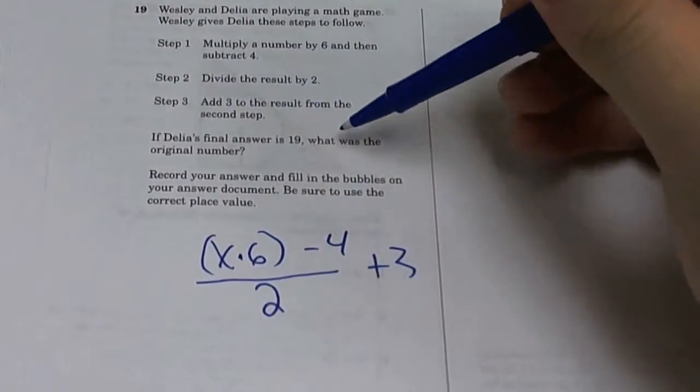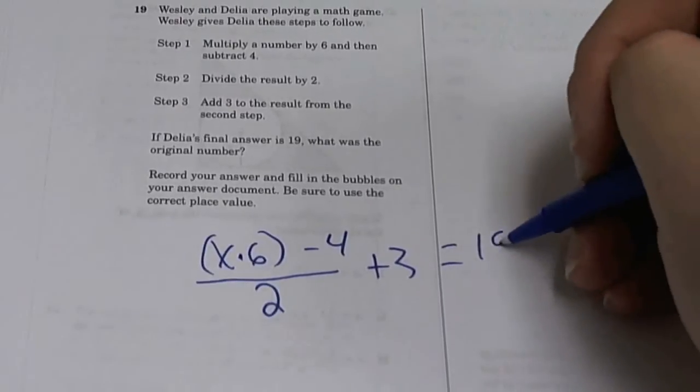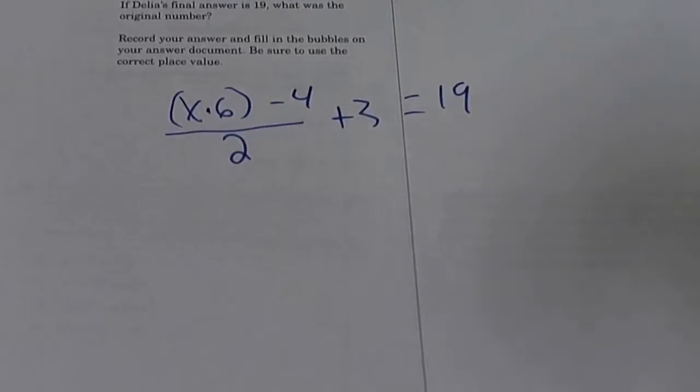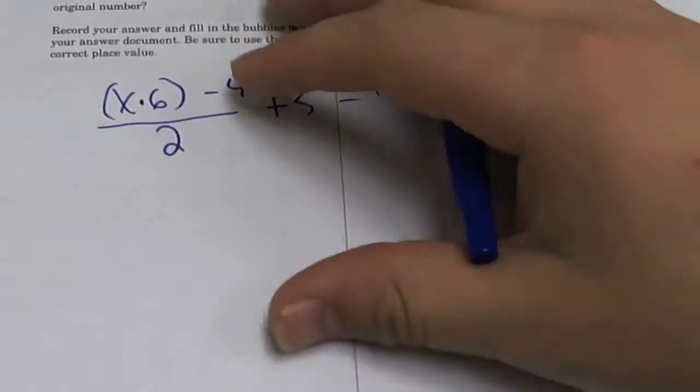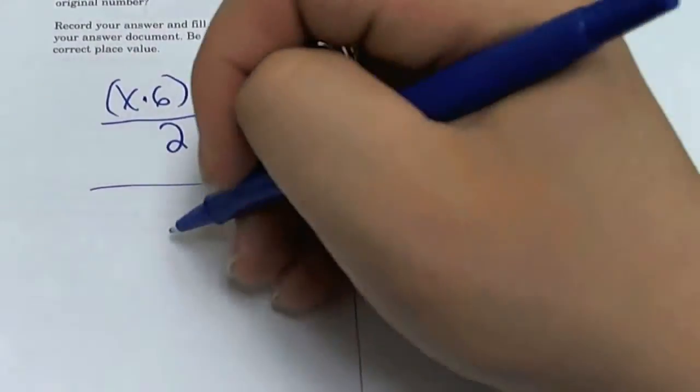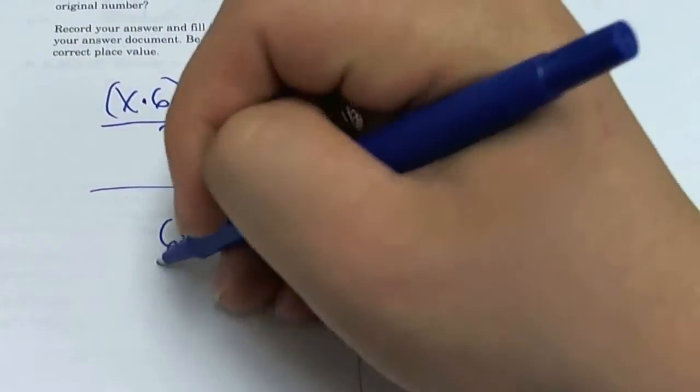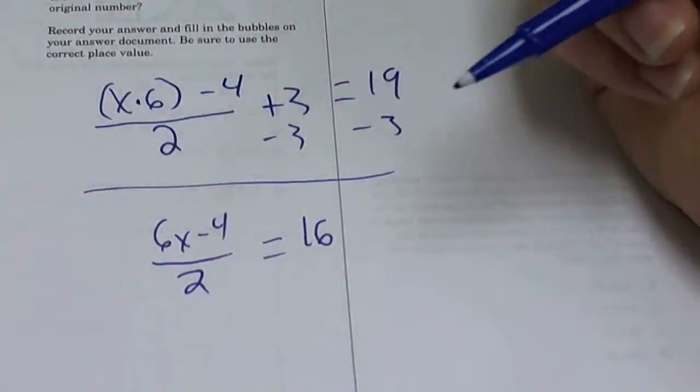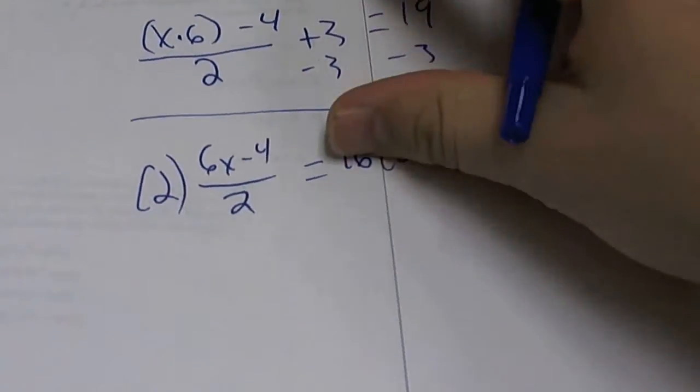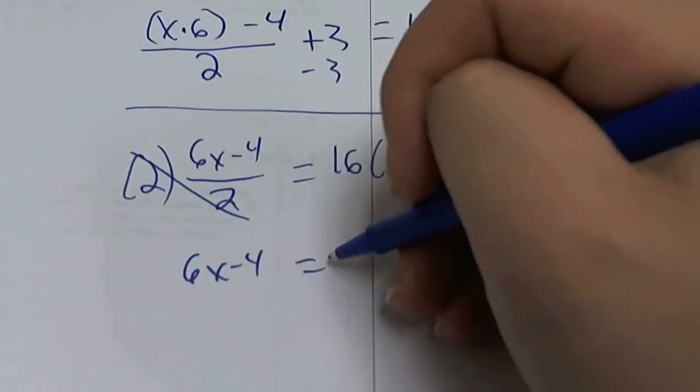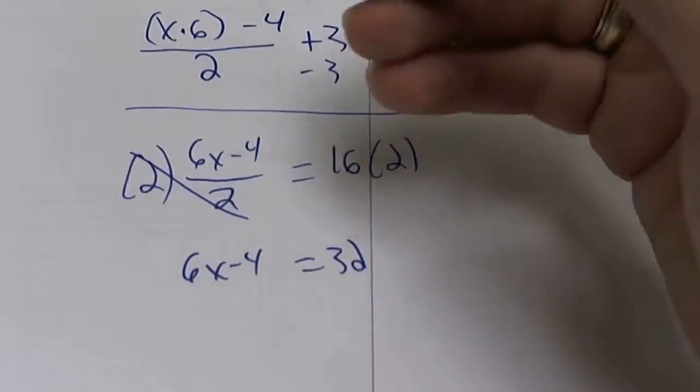If Daly's final answer is 19, what is the original number? So all this has to equal 19. Now this is just algebra, so you got to solve for X. First thing first, get rid of the plus 3. So you do minus 3 minus 3. You get 6X minus 4 divided by 2 is equal to 16. Now get rid of the 4 minus 4. You get plus 4 plus 4.